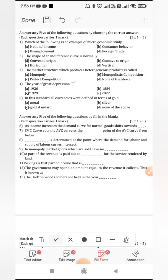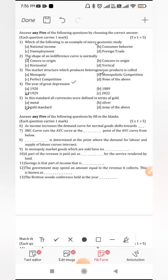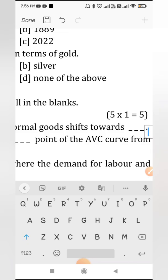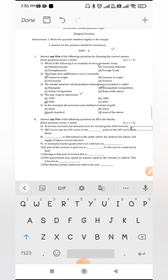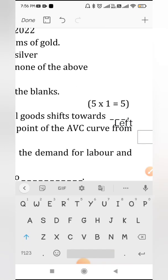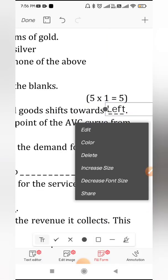As income increases the demand curve for final goods shifts towards left. We can write the text over here. The answer is left, leftward. Okay done.